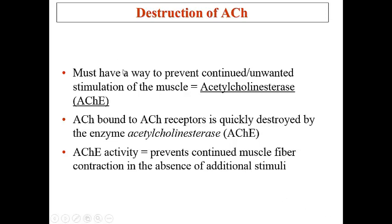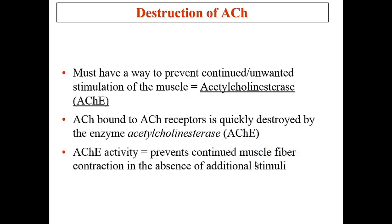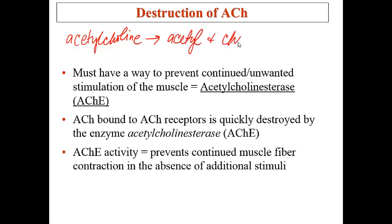After acetylcholine has bound to its receptor on the motor end plate, there has to be a mechanism to cause the acetylcholine to stop binding, otherwise the person would have continuous muscle contractions. The body prevents this by utilizing a special enzyme called acetylcholinesterase, which blocks acetylcholine from binding by breaking it down into its two components: the acetyl part plus the choline part.